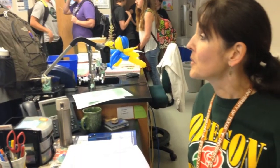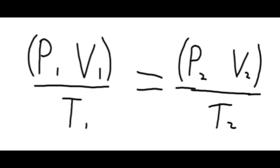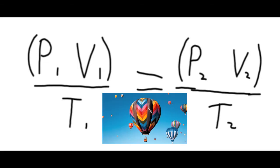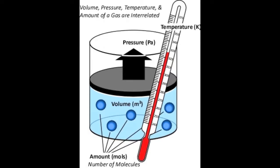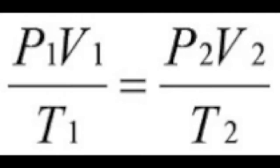Rachel, pay attention. Oh, I remember. The combined gas law is so very important to the beautiful art of hot air balloon flying. The combined gas law states that there is a relationship between an ideal gas's pressure, volume, and temperature, written simply as P1V1 over T1 equals P2V2 over T2.